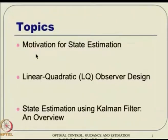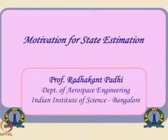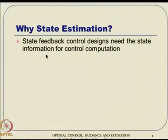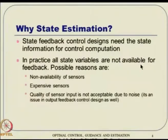Topics: motivation of state estimation — why do we want to do that? The first thing is for state feedback control design, we really need information about the state, and hence we need to do state estimation. In practice, all state variables are not available for feedback, and possible reasons can be non-availability of sensors — sensors are simply not there, or even if they are there, they can be sometimes quite expensive.